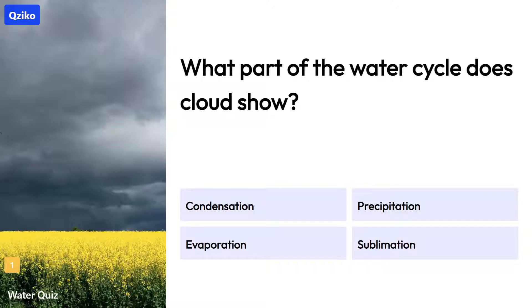What part of the water cycle does a cloud show? The right answer is condensation.